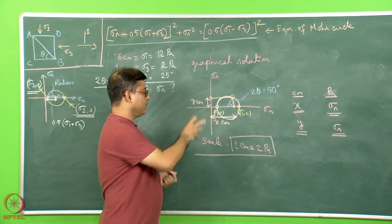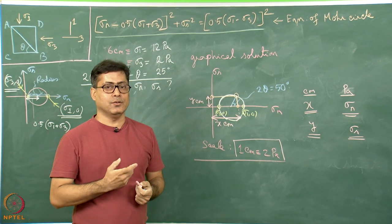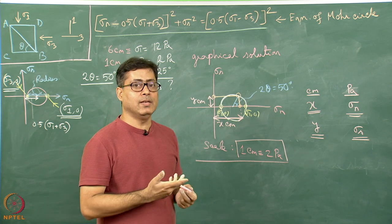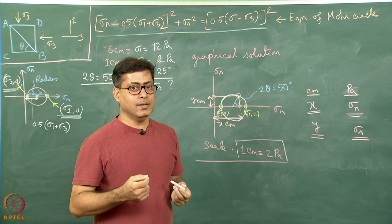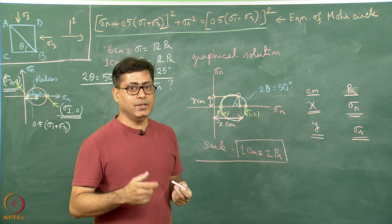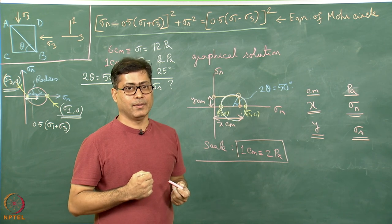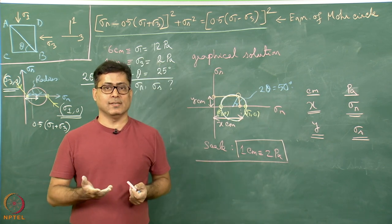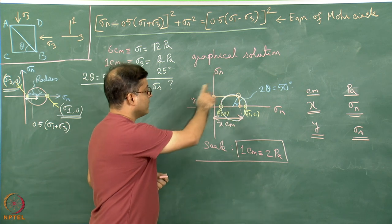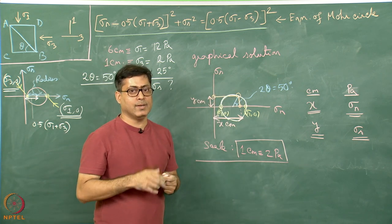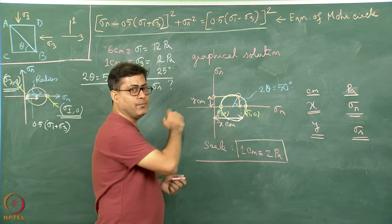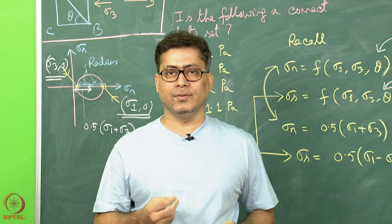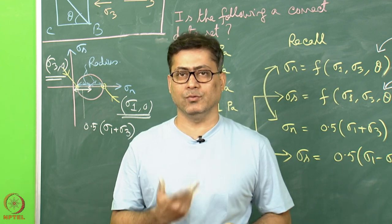A question comes to mind: if I do this graphically and also use a calculator with the formula to find sigma N and sigma S, which gives the more accurate answer? The calculator is more precise. The reason is that when we do such drawing, there will invariably be some mistake — person to person, the accuracy of the diagram will vary. Having understood the Mohr circle, we will now look at a few specific problems.